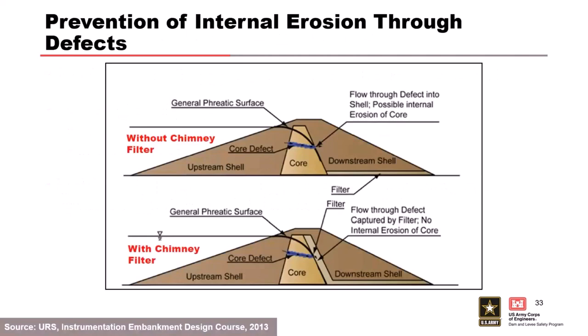If you don't have a chimney and you've got a defect in the core — maybe from a winter shutdown where you had a layer with frost penetration that wasn't properly cleaned out — you've got seepage coming through the core breaking out into the downstream shell with an internal erosion issue. Your blanket drain doesn't help that much. Whereas with a chimney, it stops that internal erosion and drops the phreatic surface. It's great insurance.